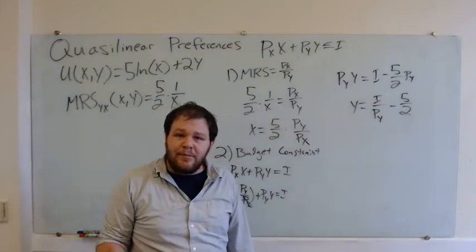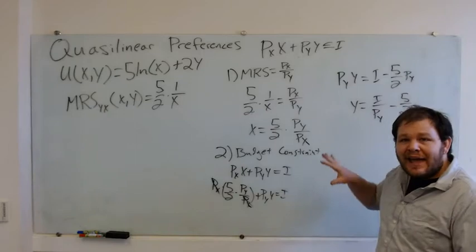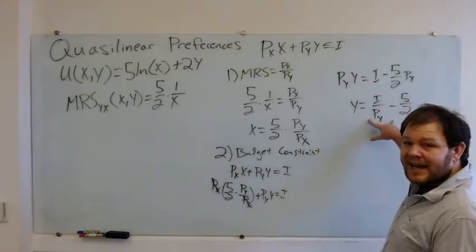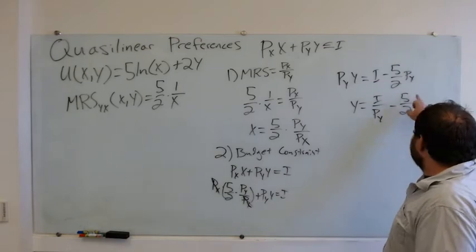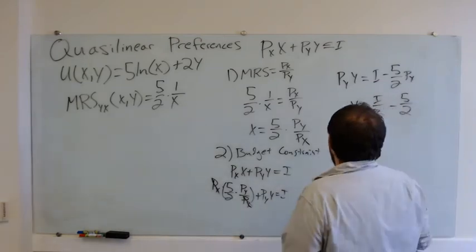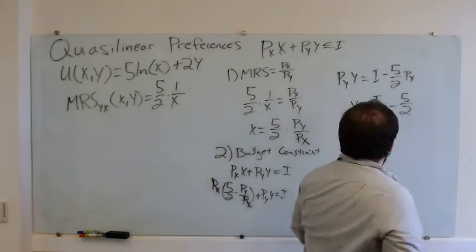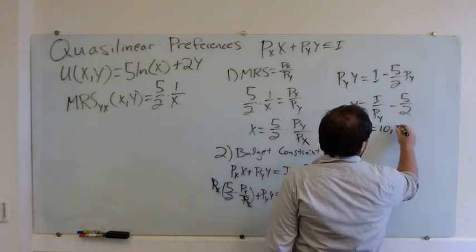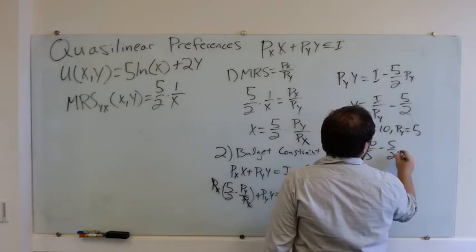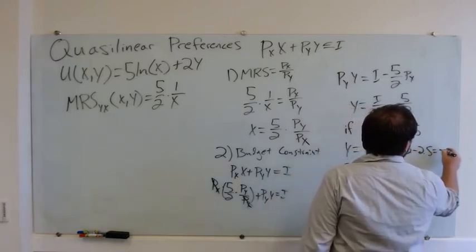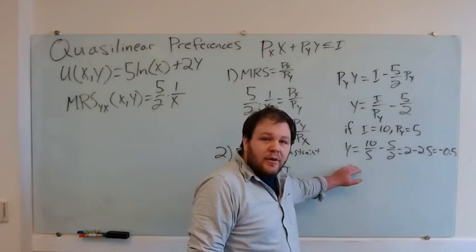So am I done — did I solve the problem? The answer is maybe. I got x and y that satisfy the conditions: MRS equals price ratio, and the budget constraint is satisfied. The only problem is I don't have any way to know whether I over PY is bigger than 5/2. What if I had an income of 10 bucks and PY was 5 bucks? Then y equals 10/5 minus 5/2, which is 2 minus 2.5 — negative 0.5. I've solved for a negative quantity of some good, which isn't actually possible.